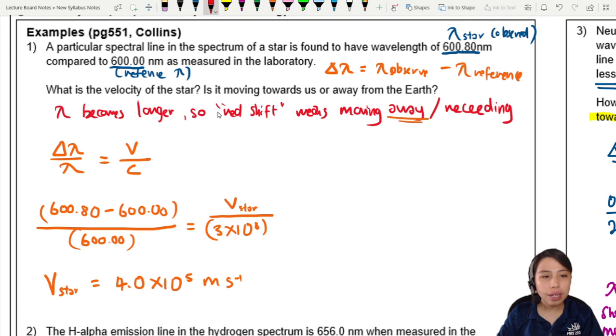So one thing to point out is note that when you minus observed wavelength minus reference wavelength, you get a positive value. Okay, so if you stick to this convention, a positive value means moving away, receding.